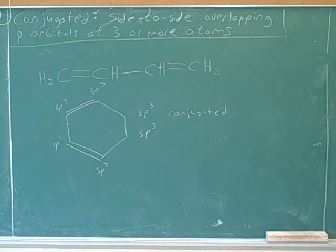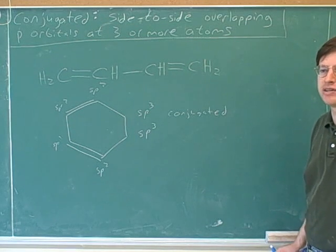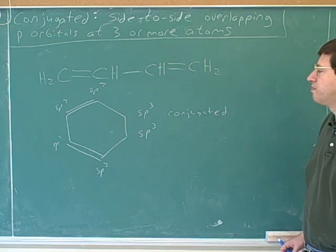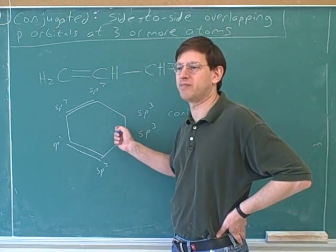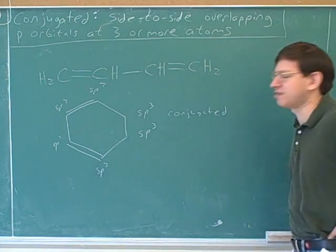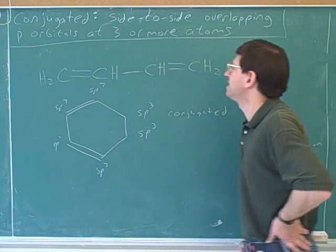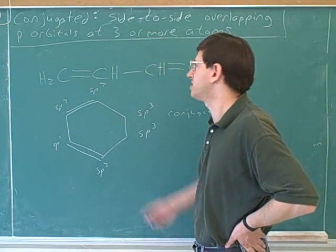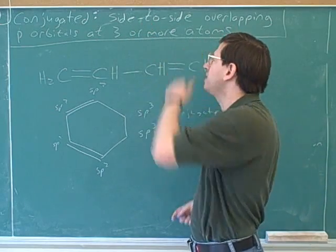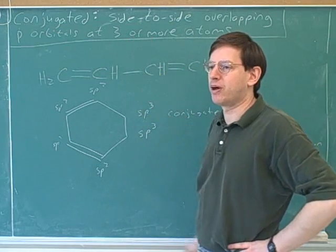This might be where that video series throws you off a little bit, because in that video series I was focusing on whether the molecules were completely conjugated, and that's not really a concept we'll need for your course this term. It would be completely conjugated only if there were overlapping p-orbitals at every atom in the ring. So we would not say this is completely conjugated, because there's not overlapping p-orbitals at all the atoms in the ring, but it's still what we could call partially conjugated. For this term, we could say it is conjugated — all we need is three or more atoms. You don't need to have the overlap at all the atoms.